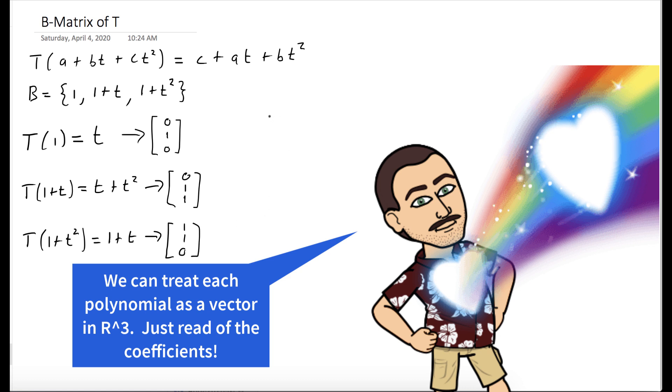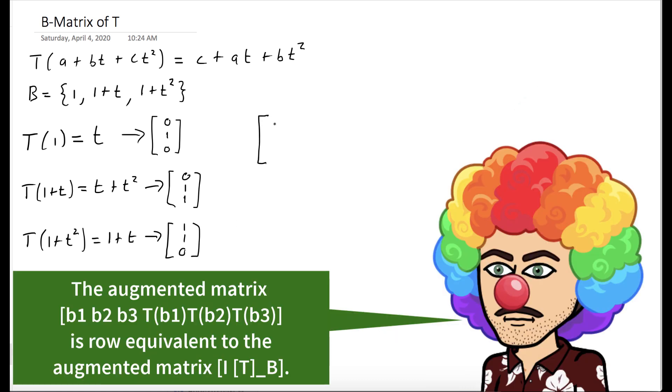So the way we'll find the B-coordinates of each of these images is we'll take an augmented matrix whose first three columns correspond to our basis elements, and whose next three columns correspond to the image under T of our basis elements.